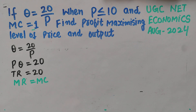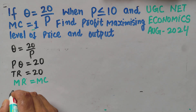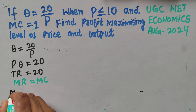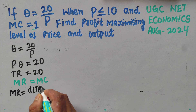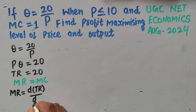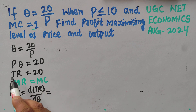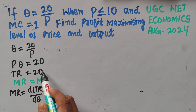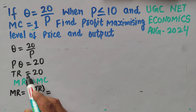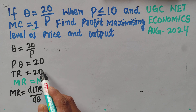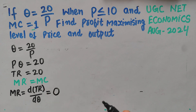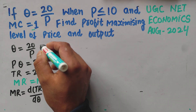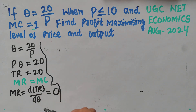To find marginal revenue, we differentiate total revenue with respect to output. Marginal revenue is the derivative of the total revenue function with respect to q. Since total revenue = 20, which is a constant with no q term, the derivative with respect to q gives us marginal revenue equal to 0.